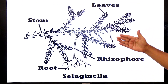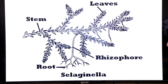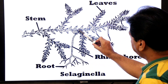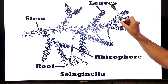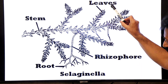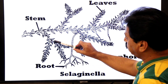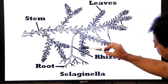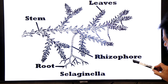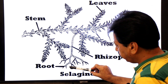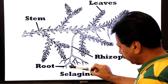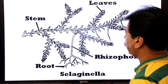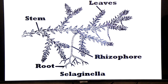This is the diagram showing the sporophyte of Selaginella. Here you see roots, here you see stem, and here you see leaves. The body of the sporophyte is differentiated into root, stem, and leaves. There is a root-bearing organ known as rhizophore, and from it the roots that arise in the Selaginella plant are called adventitious roots.